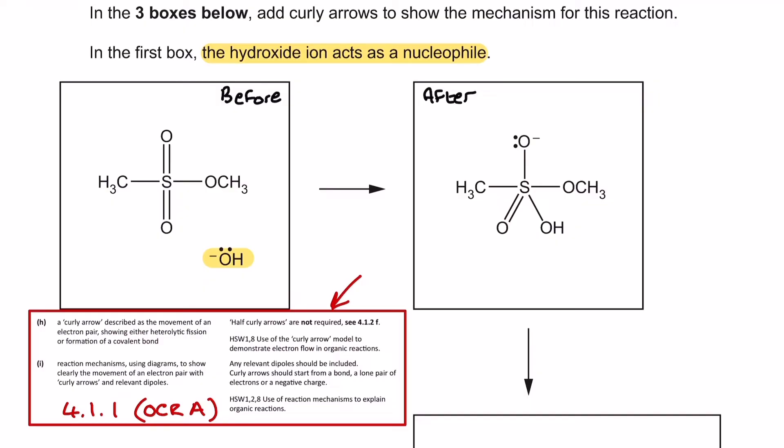And so, that nucleophile, particularly its lone pair, is going to be the starting point of a curly arrow. Where's the curly arrow going to go?